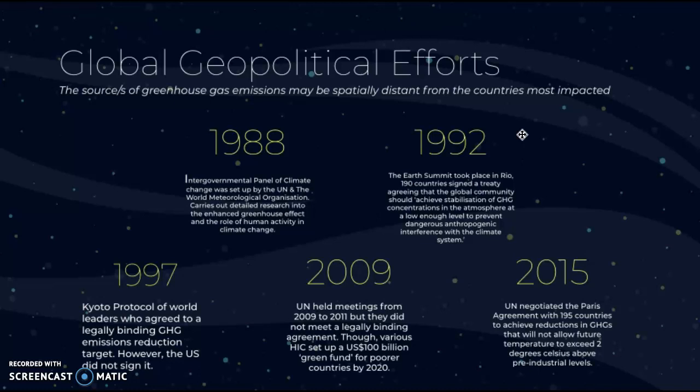The 190 countries agreed that the global community should achieve stabilization of greenhouse gas concentrations in the atmosphere at a low enough level to prevent dangerous anthropogenic interference with the climate system. Then in 1997, the Kyoto Protocol saw world leaders agree to legally binding greenhouse gas emissions reduction targets. However, the US did not sign it, which diminished its value given the US's large global geopolitical influence. The US held meetings from 2009 until 2011 but did not reach a legally binding agreement.